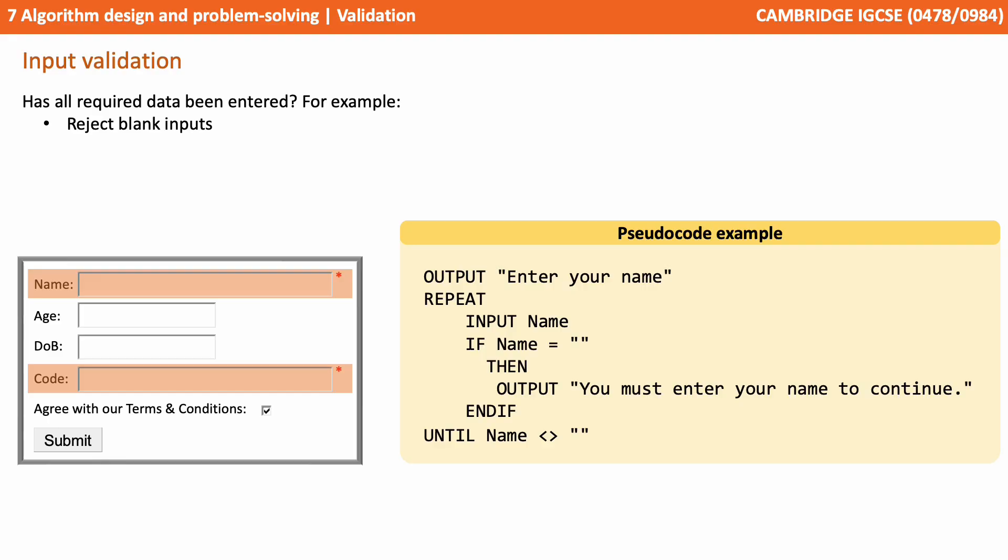Again, we can simply include an if statement within a loop that says if the value entered into the name field is double quotes, double quotes - in other words, if it's empty - we tell the user you must enter your name to continue, and we carry on repeating that loop until it isn't empty.